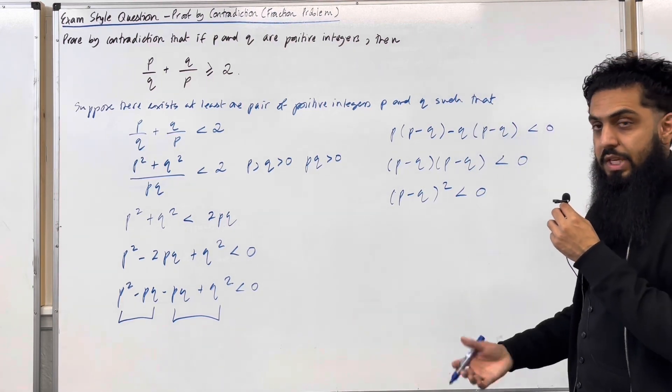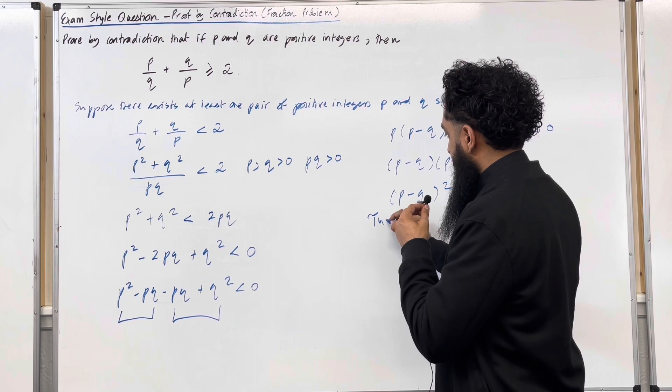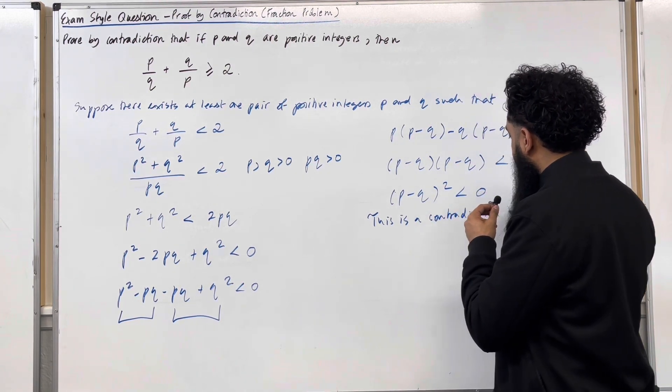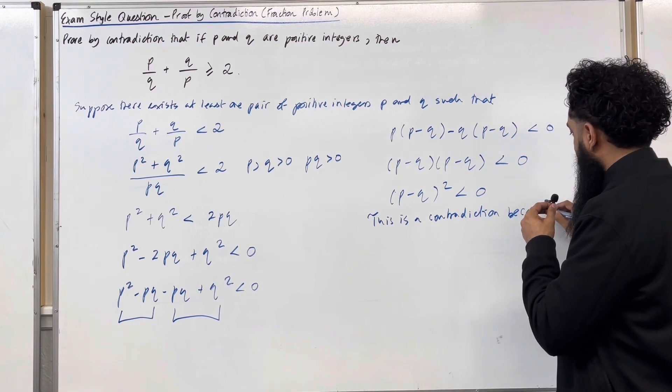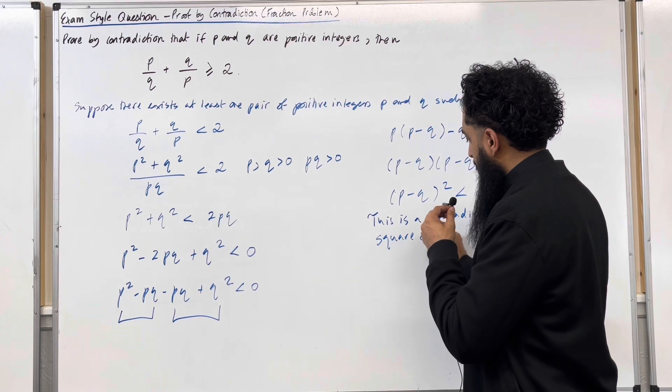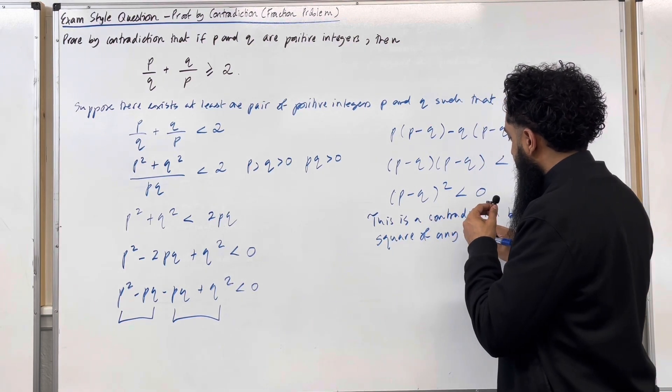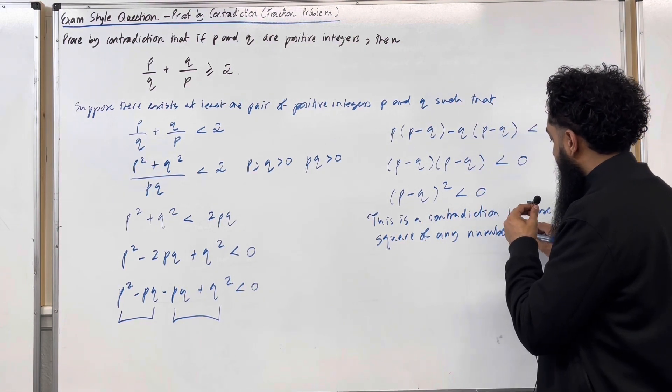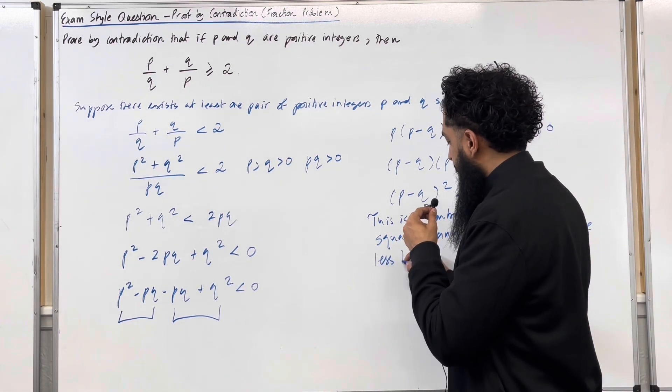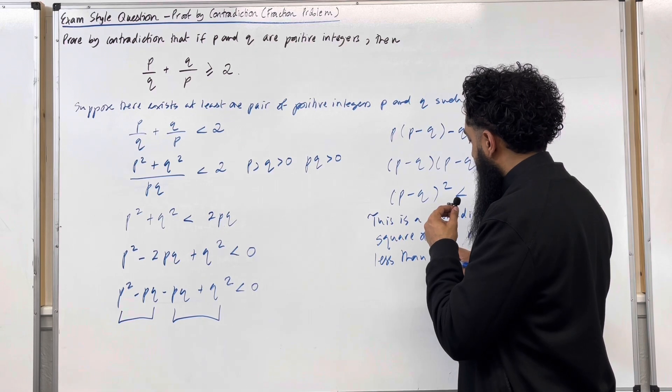This is a contradiction. Because the square of any number can never be less than 0.